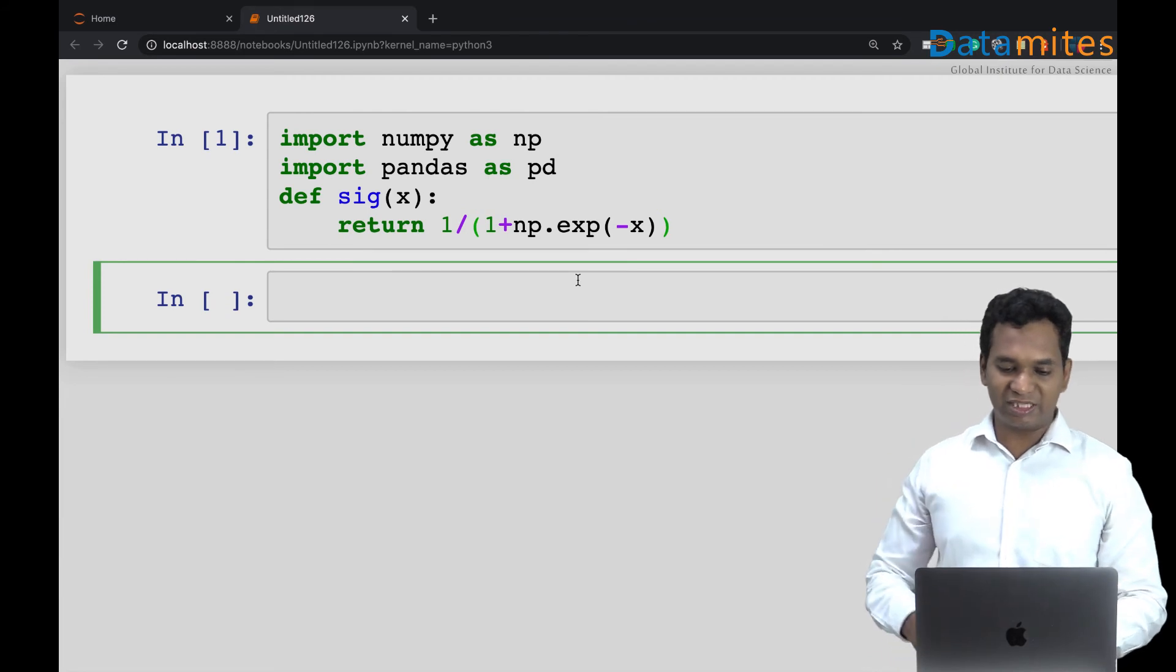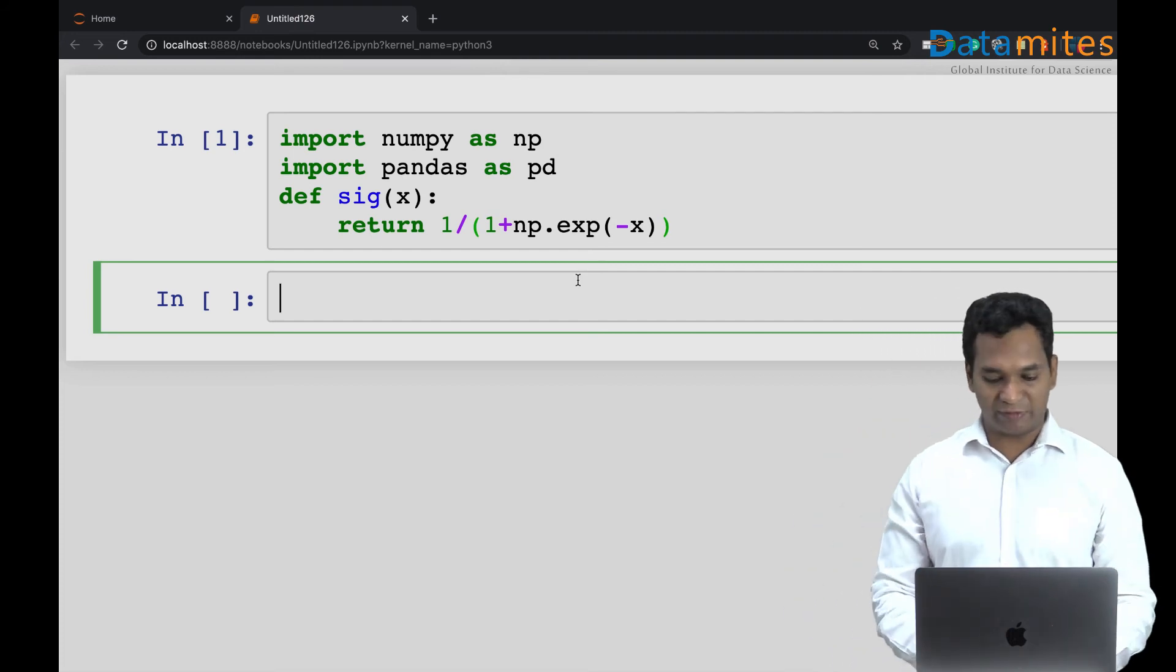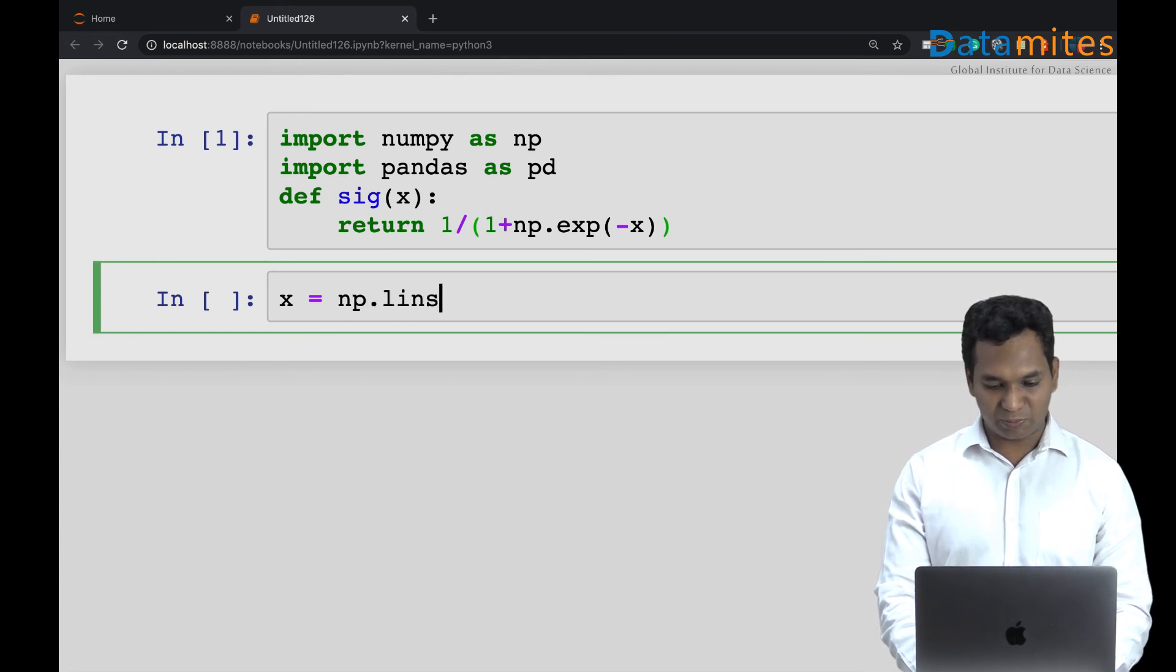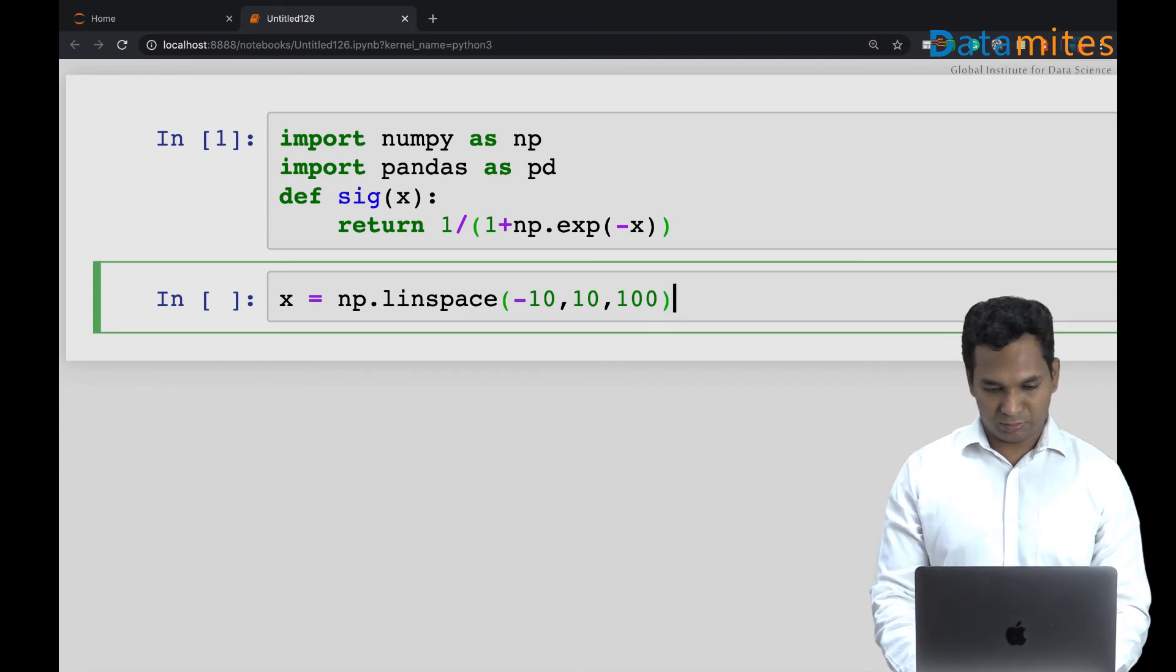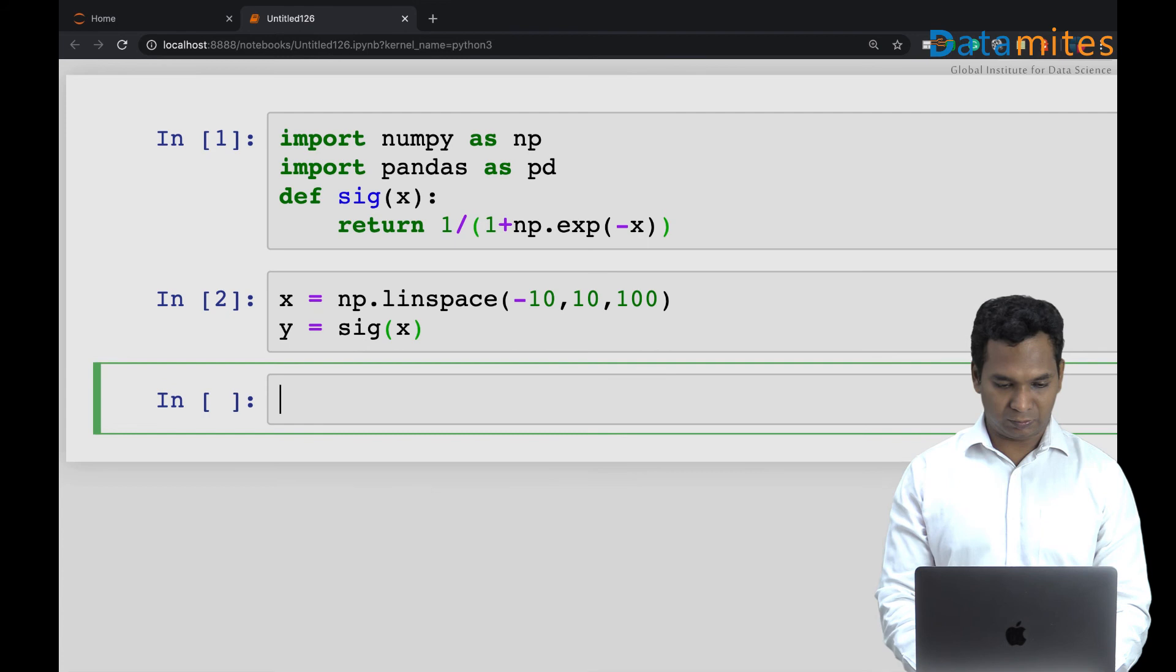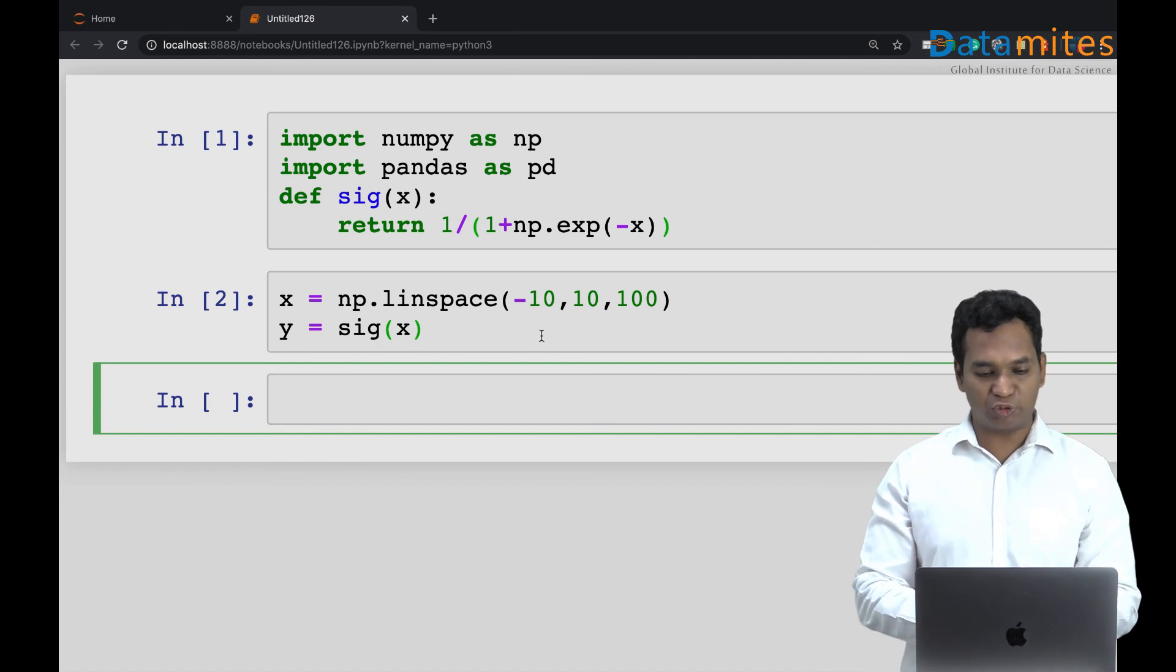And I can just generate a bunch of x values, pass it across and capture that as a y value which is a probability value. I'm gonna say x equals np linspace from let's say minus 10 to plus 10, 100 points between that. I'm gonna say y equals sigmoid of x. So I got all the sigmoid values, the result of this sigmoid function into y.